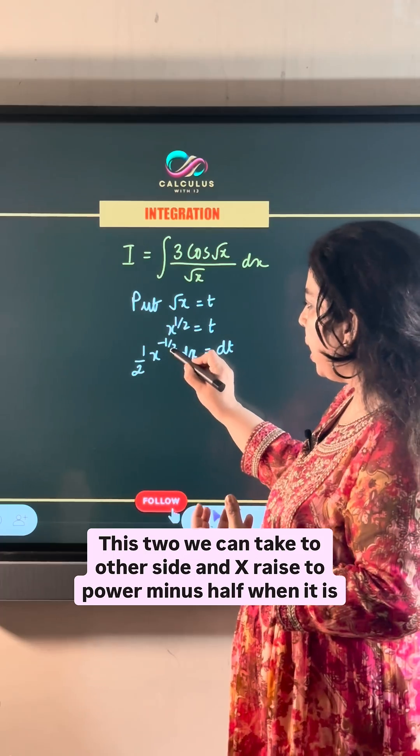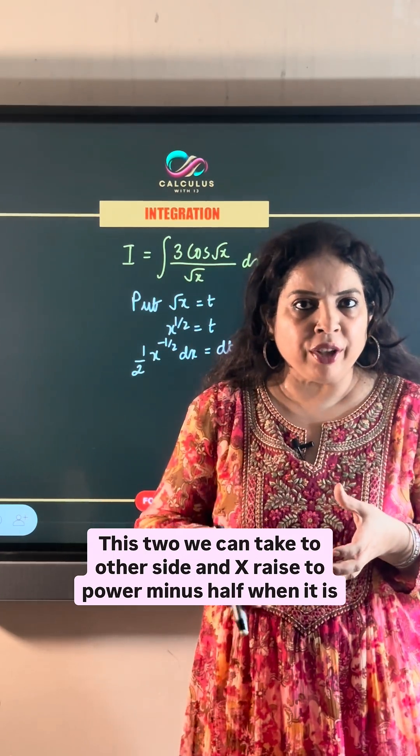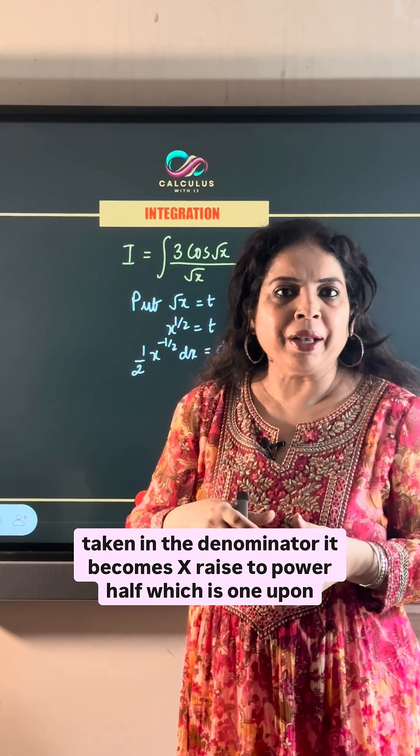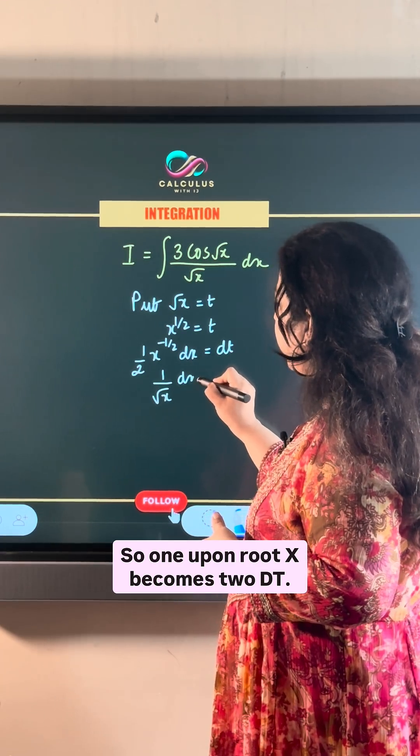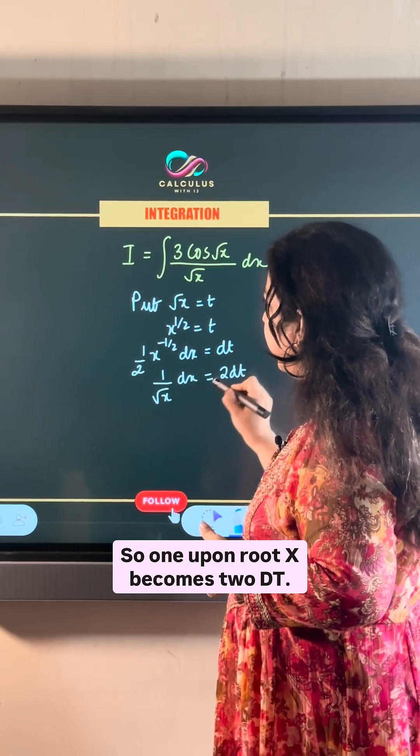This 2, we can take to other side and x raised to the power minus half, when it is taken in the denominator, it becomes x raised to the power half, which is 1 upon root x. So, 1 upon root x becomes 2 dt.